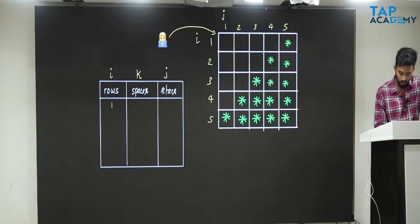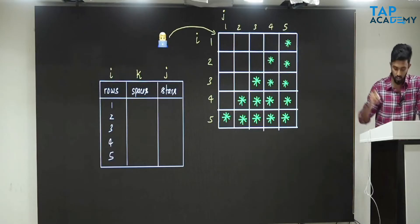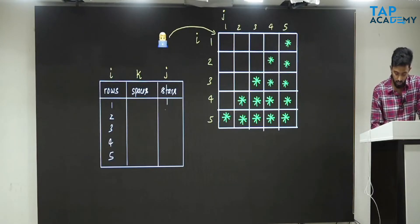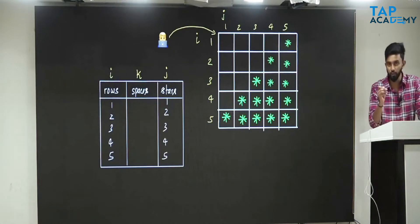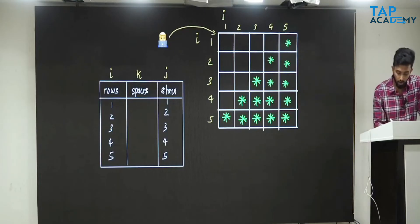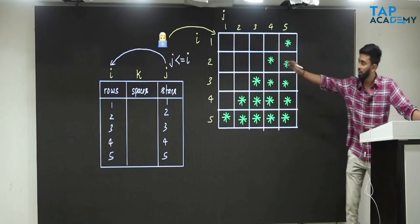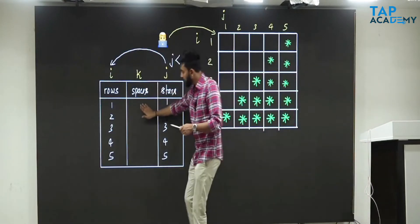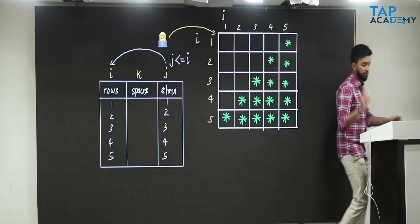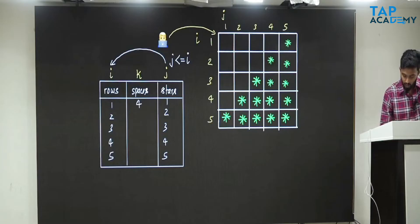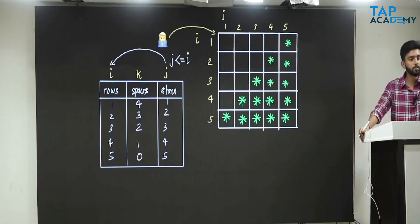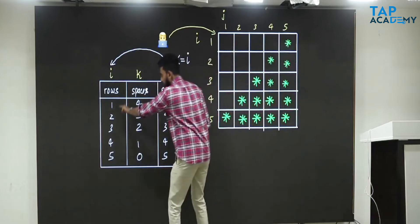Number of rows: 1, 2, 3, 4, 5 — five rows. For stars: first row one star, second row two stars, third row three stars, fourth row four stars, fifth row five stars. The relationship between J and I is J less than or equal to I — already established. Now it is time for spaces. Look: first row has four spaces, second row three spaces, third row two spaces, fourth row one space, fifth row zero spaces.